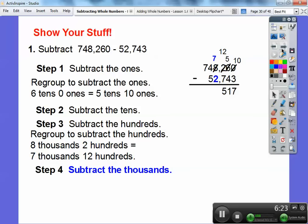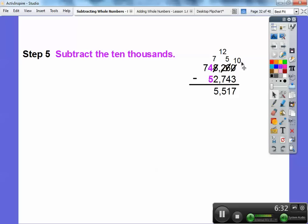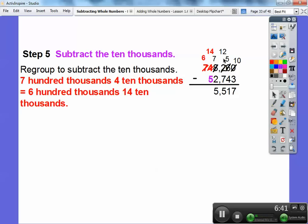Now we're going to subtract the thousands. 7,000 minus 2,000 is 5,000. Now we're going to subtract the ten thousands. Here I've got to borrow again. 40,000 minus 50,000. I'm going to change this 700,000 to 600,000 and change this 40,000 to 140,000.